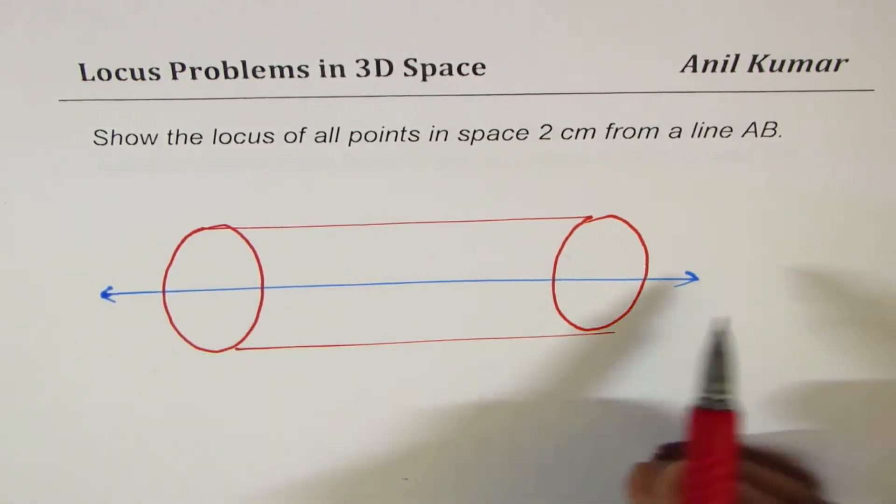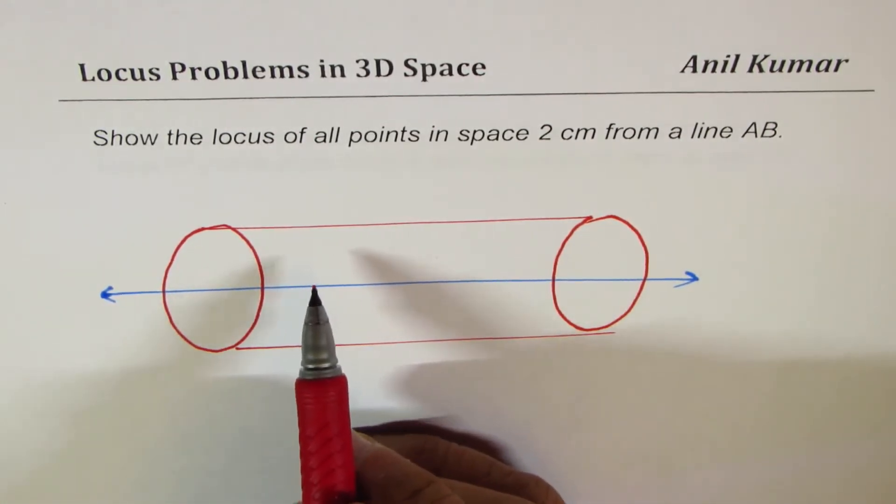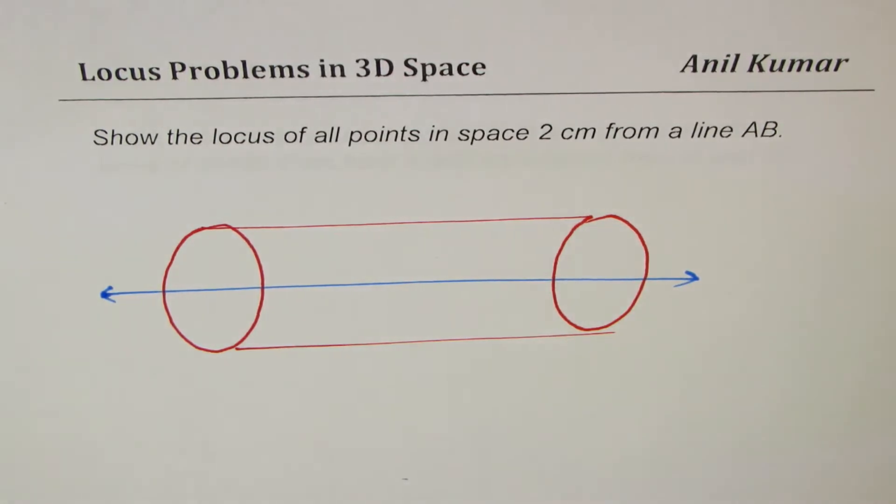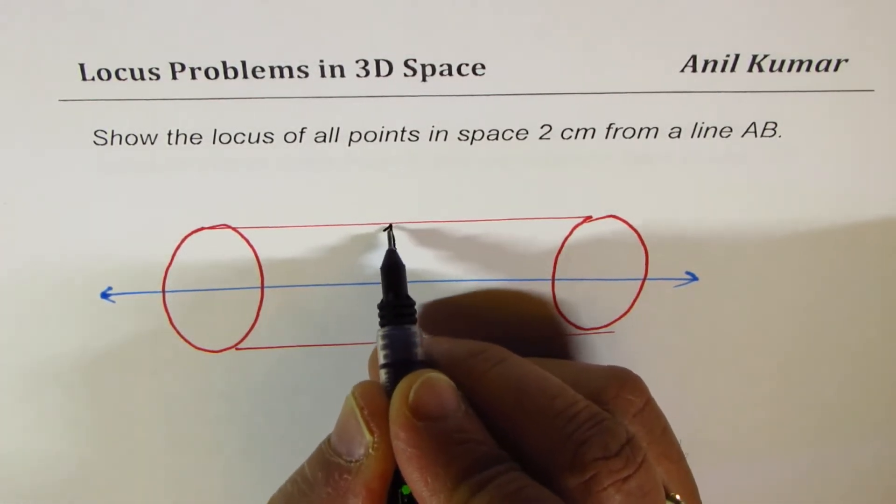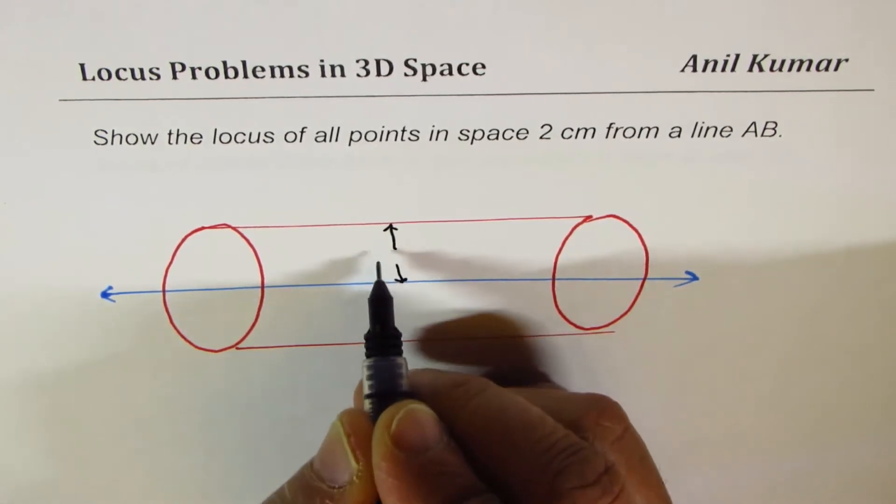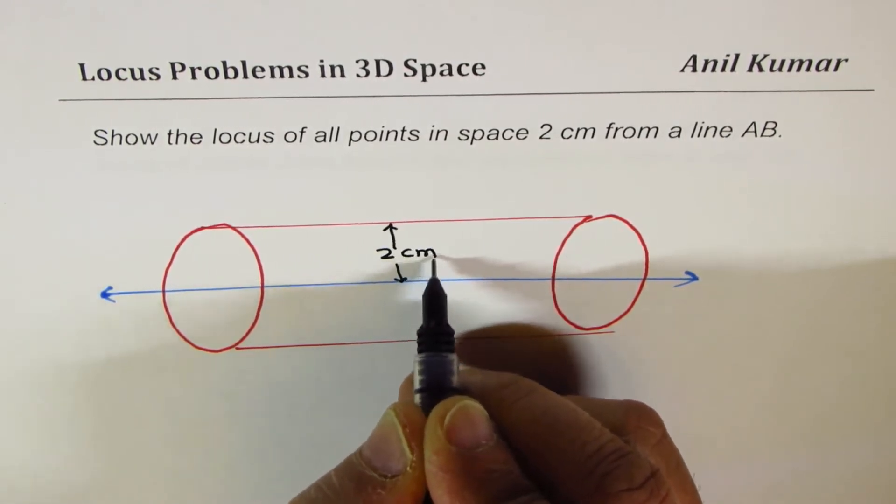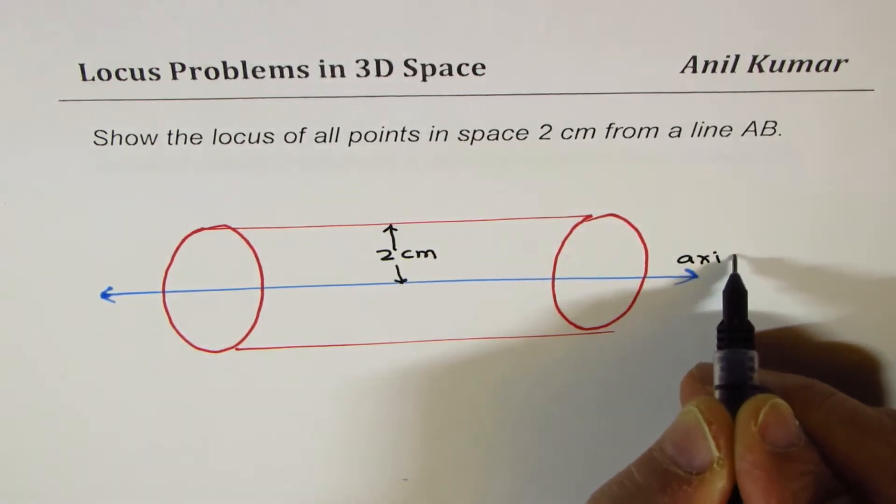As the line extends, the cylinder also extends. So, that will be the locus of all the points in 3D space, where this distance from the line is going to be 2 cm, right? So, that becomes the axis of the cylinder, right?